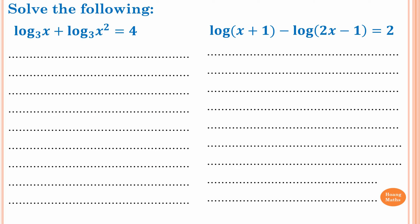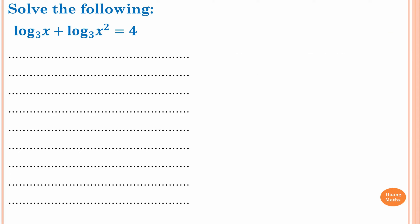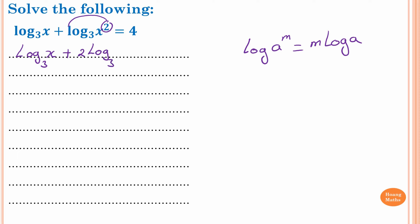Please stop the video and try this one yourself. So first of all, again, before we do anything, we need to know that log of a to the power m equals m log a. So this means the 2 comes to the front first, so which is log base 3 of x plus 2 log base 3 of x, which is equal to 4. So now collecting like terms: 1 log base 3 of x plus 2 log base 3 of x equals 3 log base 3 of x.